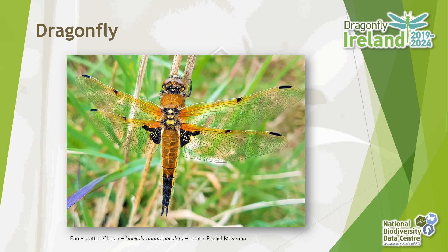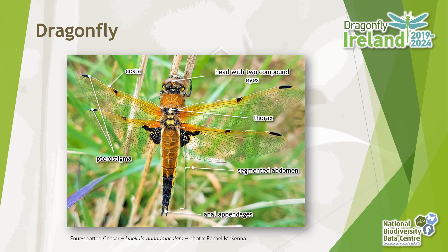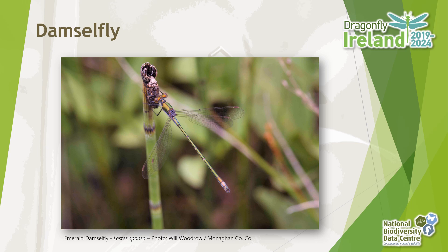Let's start then with the basic guide to the anatomy of a dragonfly. It has a head with two compound eyes positioned close together, a thorax, and a segmented abdomen with anal appendages. The leading edge of the forewing is called the costa, and the wings have pterostigma, which are areas of dense cells used for flight control.